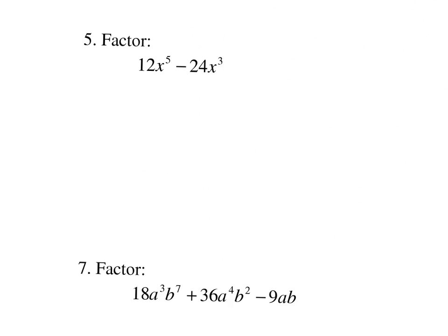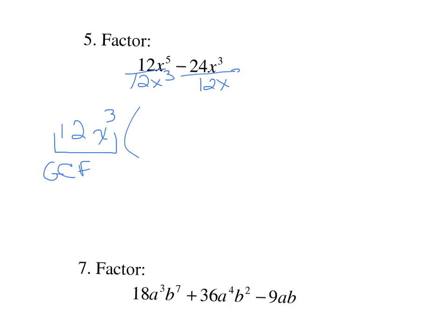Number 5: factor. The first step to factoring is to factor out the GCF, which is undoing the distributive property. The GCF of these two terms — the largest number dividing into 12 and 24 is 12, and the smallest exponent on x is 3. Now divide by the GCF to see what's left in the parentheses. The 12s cancel, and subtracting exponents gives x squared. In the second term, 24 divided by 12 is 2, and the variables cancel. Check this by doing distributive property — distributing the GCF should give you the original expression back.